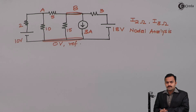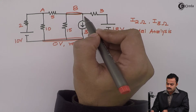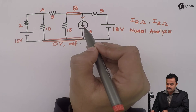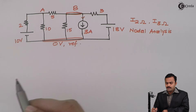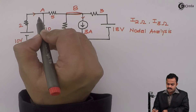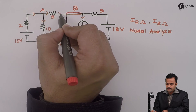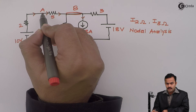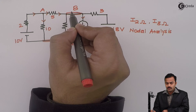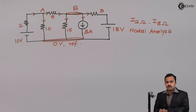The second step is to mark current directions for all the branches. The current source direction is given, so I will keep the same direction for that branch. For the remaining branches I can consider a random direction. So let's take this one as incoming, this one outgoing, and this one outgoing. This will remain outgoing for node A but will be incoming for node B. This one is outgoing and let's take this one also outgoing.